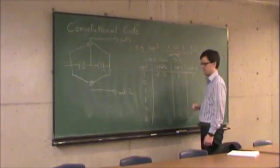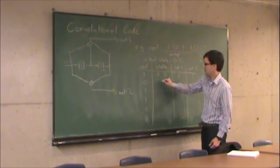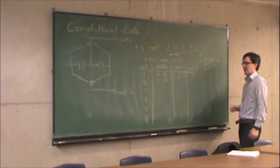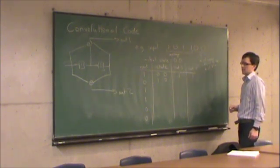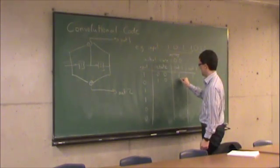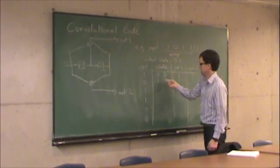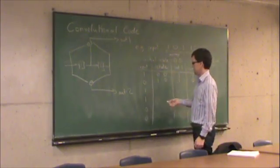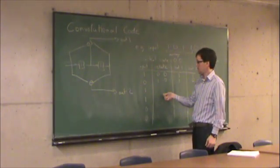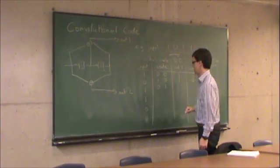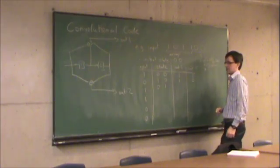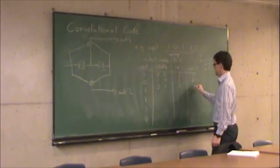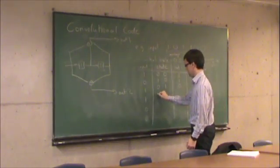What is the next state? Zero, one — reading left to right. Output one at the next stage is all three of these added together mod two, that's 1. Output two is this plus this mod two, which is 0. What's the next state? Zero, one. All three of these added together mod two is 0. This plus this mod two is 0. Next state is 1, 0.